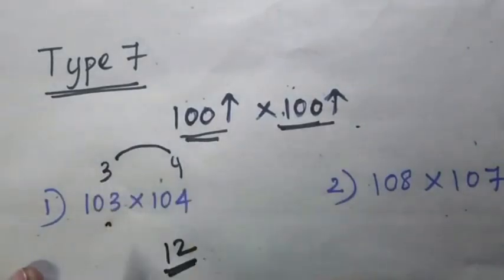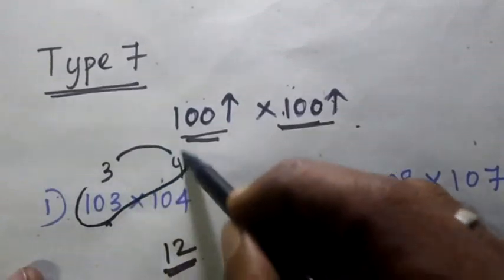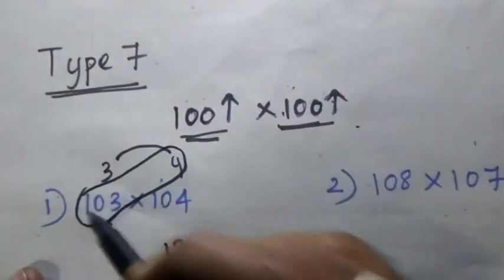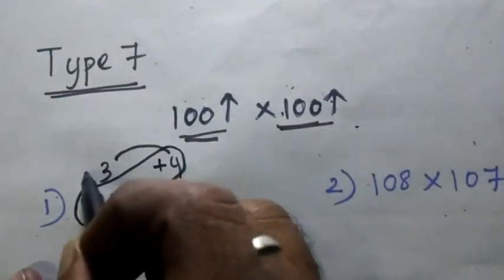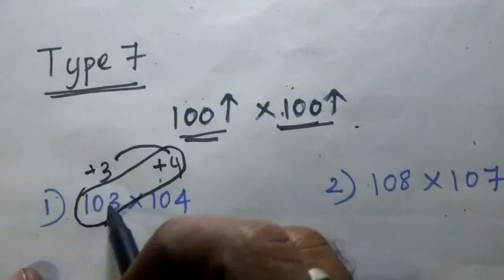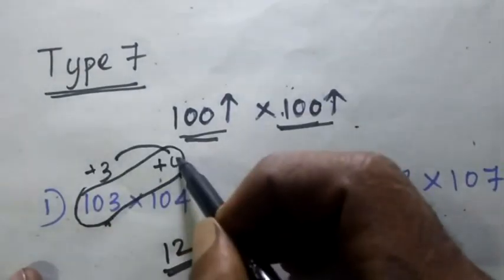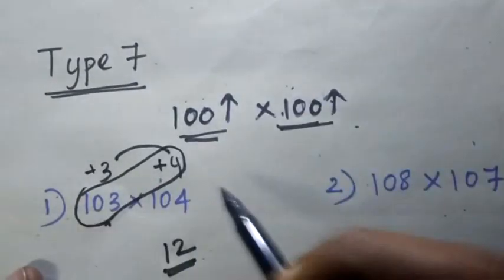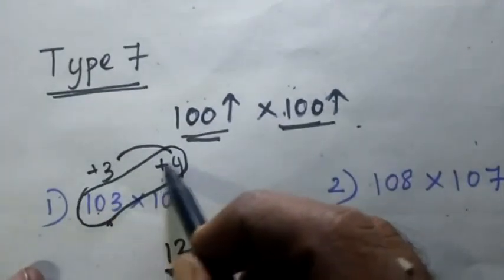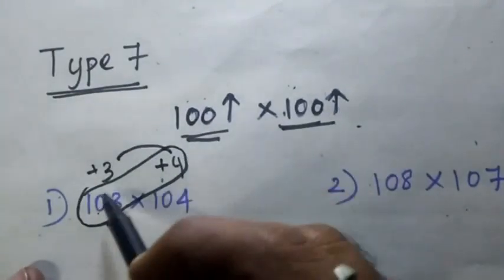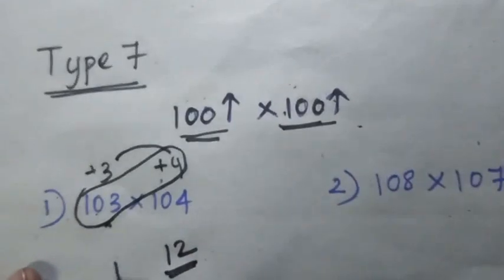3 × 4 is 12. Now we will do this — plus 3, so 1 × 3 is simple, plus 4. So 1 × 3 plus 4 is 107.